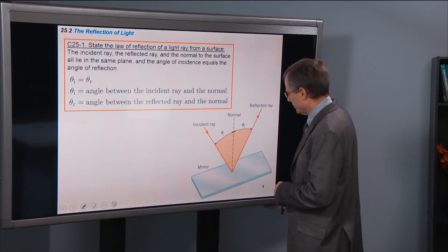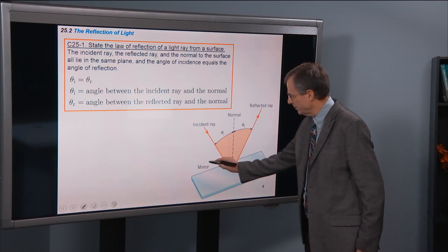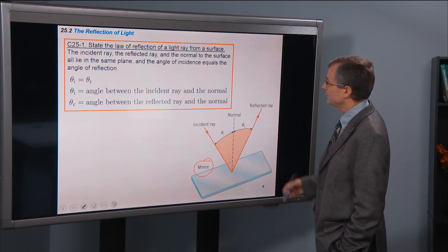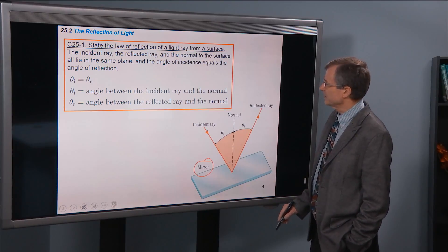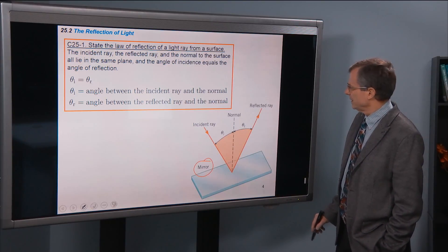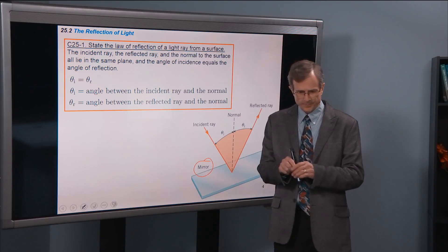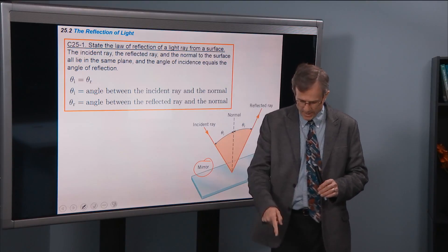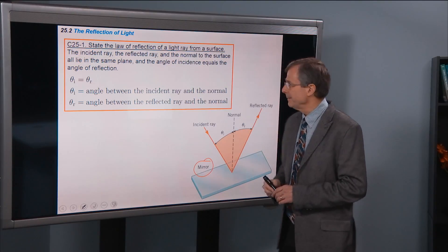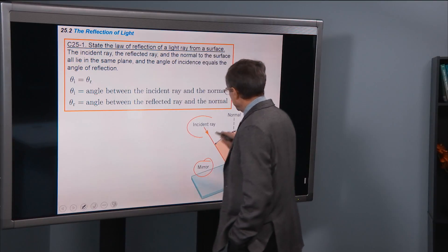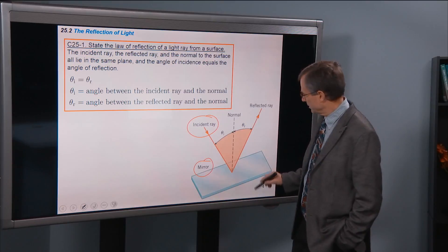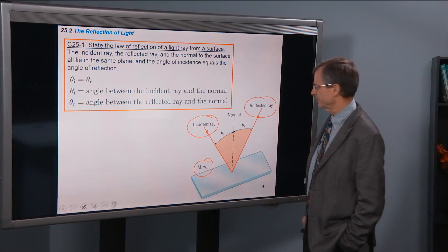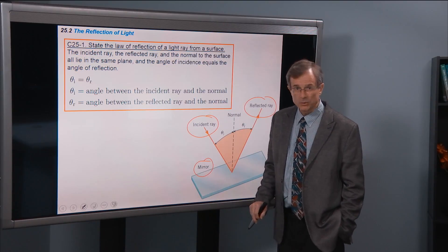So for specular reflection, for a nice flat mirror, for example, or some kind of a shiny surface, we will talk about the reflection, the law of reflection of a light ray from a surface. The incident ray - think about using a laser pointer and pointing it at a surface and then having it reflect back off. That's what we mean by a ray. And the incident ray is the one that is incident, coming toward the surface, the reflected ray is the one that bounces off of the surface.